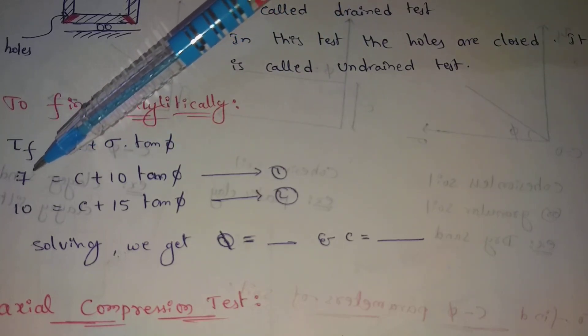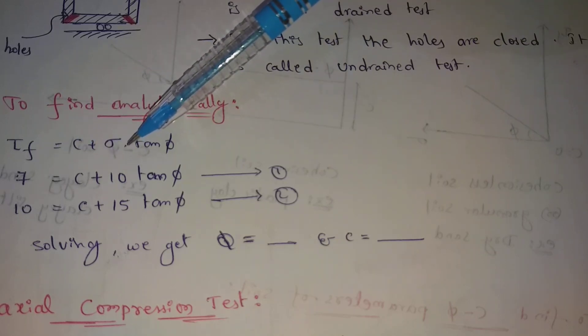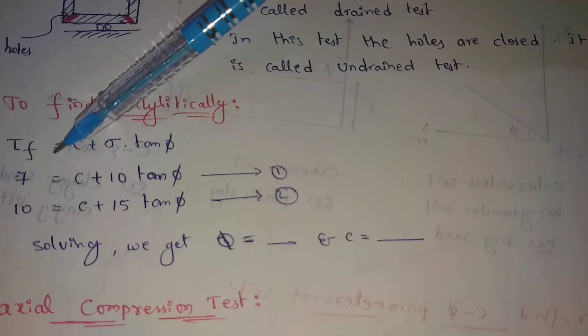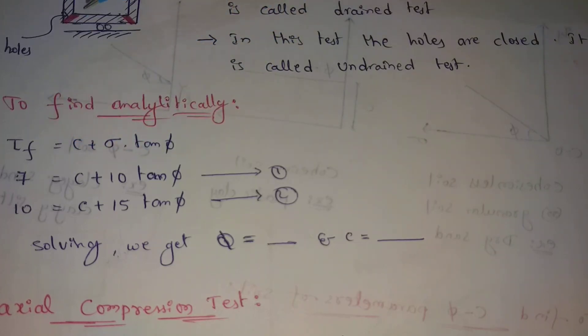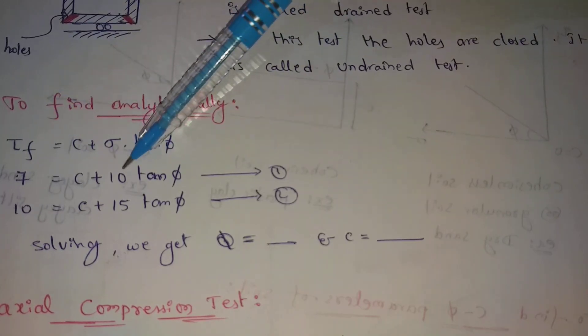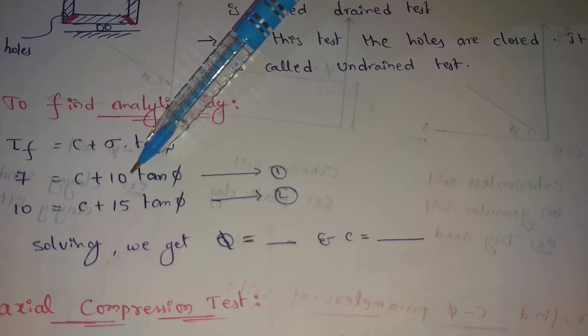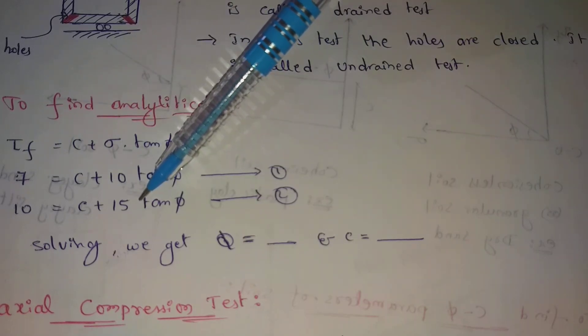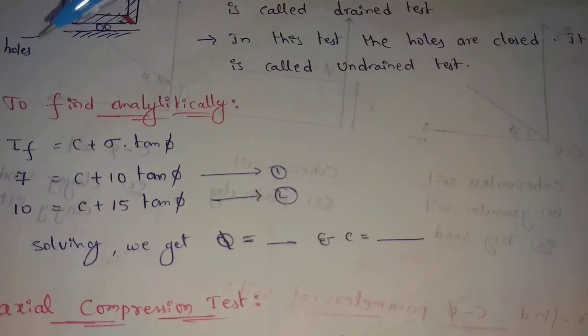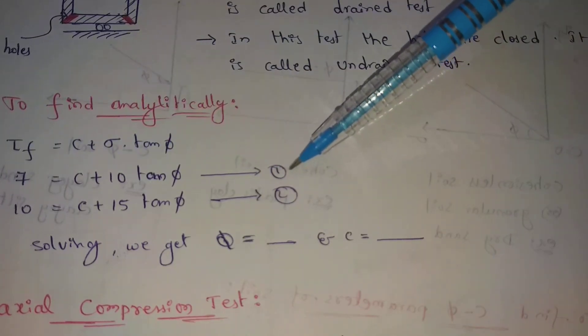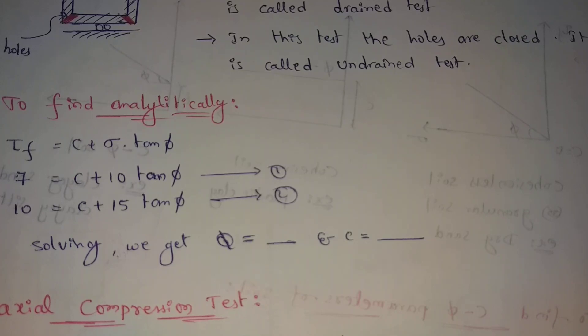Already we have tau-f values, we have phi-values. In this exercise comparison we will find the norm variables. To find out this box here comes to phi-value and c-value. Using two equations we can find phi value and c value. This is how we use the direct shear test.